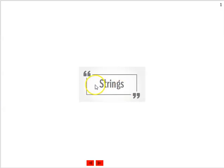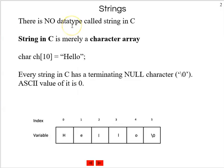Let us look at strings in C. A string is nothing but a sequence of characters. Now let us look at how to do string processing — that is reading strings, writing strings, how to modify strings, compare strings. That is what is going to be the focus of this chapter.